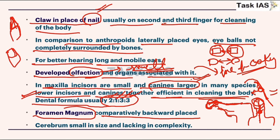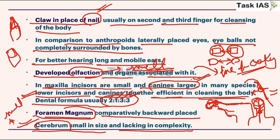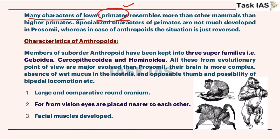Foramen magnum in prosimians is placed laterally, not in the center position. Cerebrum is small in size and lacks complexity. The cerebrum involves processes of smell, hearing, and processing of information. If the size is small, it shows that prosimians lack these complex processes. Many characters of lower primates resemble prosimians, showing they are less evolved compared to later apes, great apes, or humans.